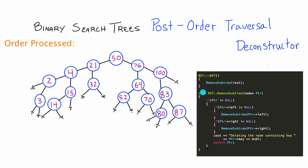I've got two functions up here. The destructor function simply calls the remove subtree function and passes in the root pointer. The second function is the remove subtree function which passes in a node pointer and performs the post-order traversal. By passing in the root we ensure that we delete the root and everything underneath it, therefore deleting the entire tree.